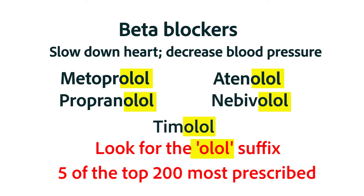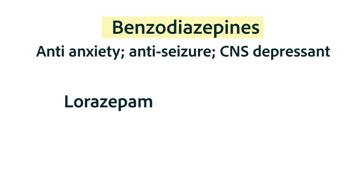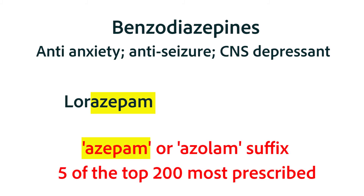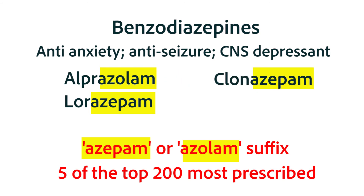No one expected you to recognize the other drug classes, but just in case you were curious: lorazepam is an anti-anxiety, anti-seizure medication in the drug class called benzodiazepines. You may know benzodiazepines as benzos, or as related to Valium and Xanax. Those drugs end in -azepam or -azolam. When you learn about that drug class, you'll learn about five more of the 200 most widely prescribed medications: alprazolam (Xanax), clonazepam, lorazepam, diazepam (Valium), and temazepam.